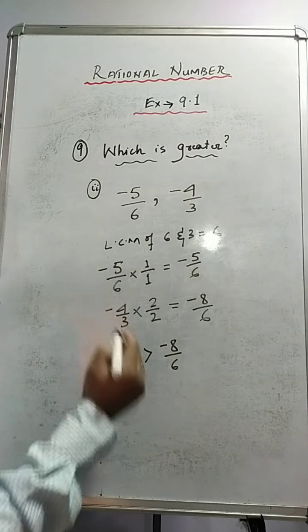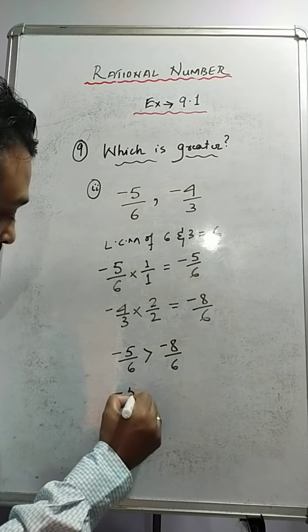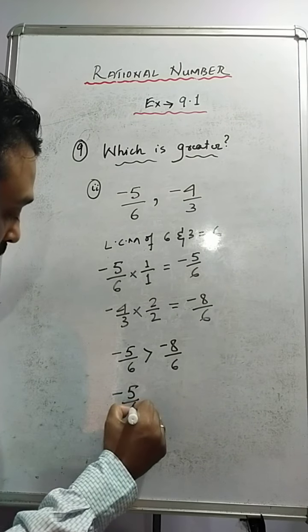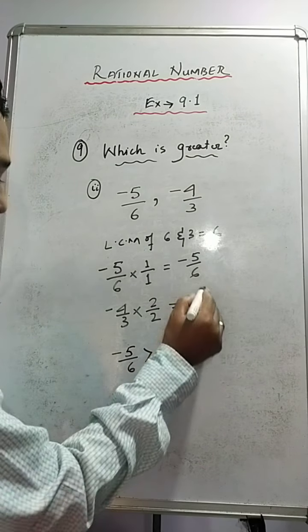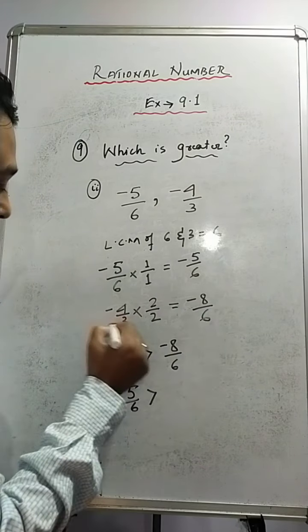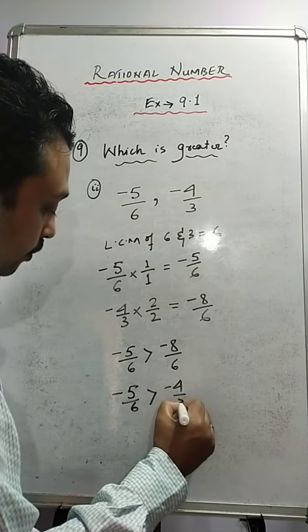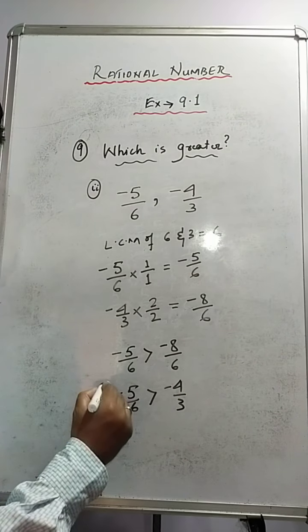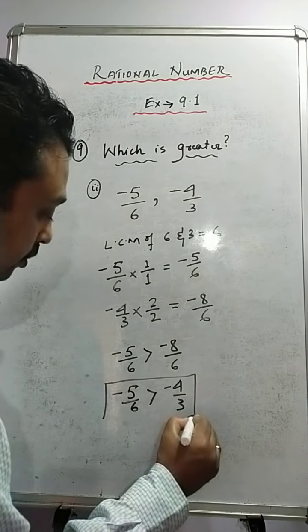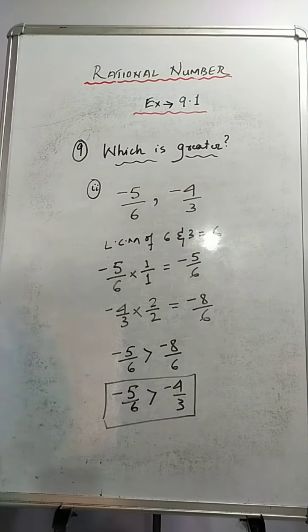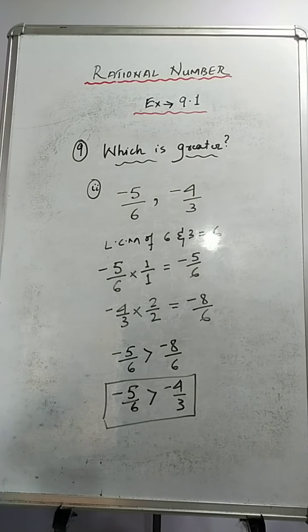So minus 5 upon 6 is greater than minus 8 upon 6. Minus 5 upon 6 comes from the original fraction minus 5 by 6, and minus 8 by 6 comes from minus 4 upon 3. This is the solution of sum number 2.